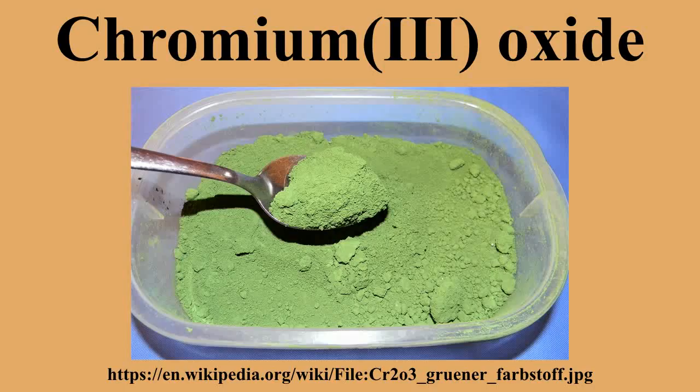Similar to corundum, Cr2O3 is a hard, brittle material. It is antiferromagnetic up to 307 K, the Néel temperature. It is not readily attacked by acids or bases, although molten alkali gives chromite salts with the chromous anion, not to be confused with the related mineral chromite. It turns brown when heated, but reverts to its dark green color when cool.